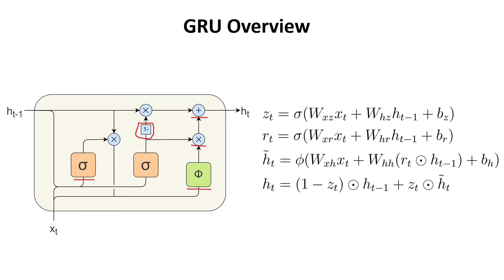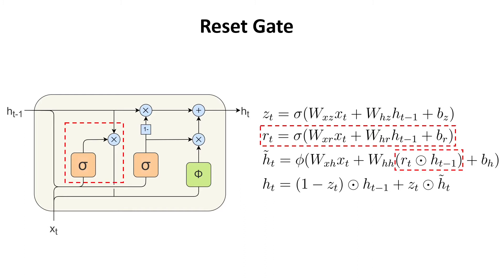Here on the right we have the equations that characterize the gated recurrent unit. We'll go through each of them and see how they process the input and help transfer the hidden state from one step to another. The gated recurrent unit has two gates, in comparison with the three gates found in the long short-term memory cell.